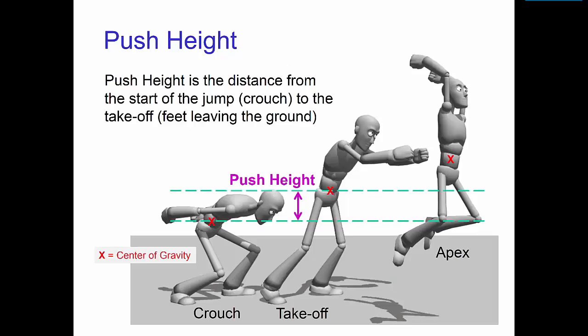At the start of a jump, the character is rising out of the crouch, pushing with the legs in order to get into the air. We'll call the distance over which the character pushes the push height, and the distance from takeoff to apex the jump height.